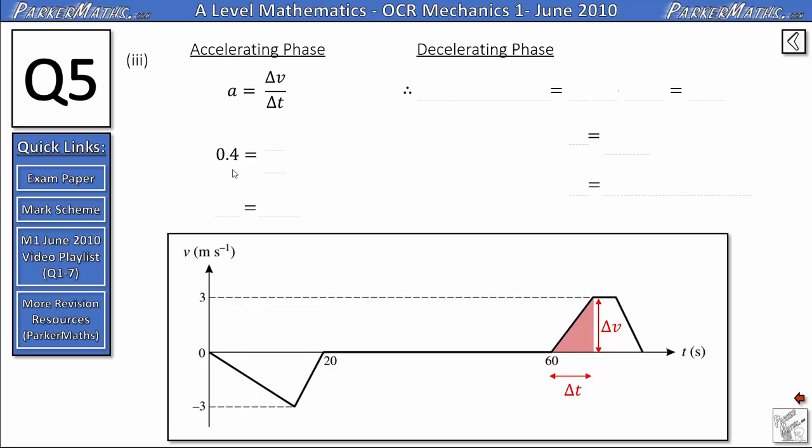We know the acceleration, that's 0.4 metres per second squared. Delta v is just the height of this trapezium, which is 3. Delta t is the part we're trying to find.